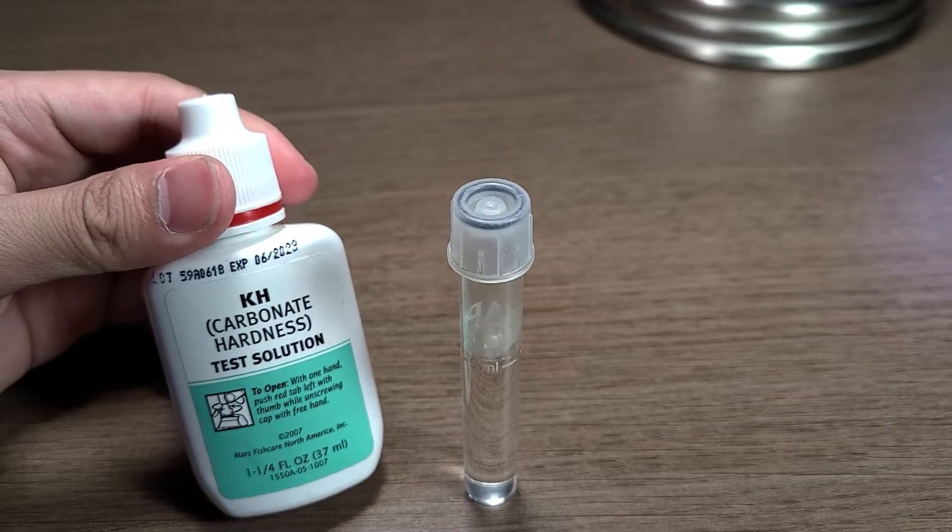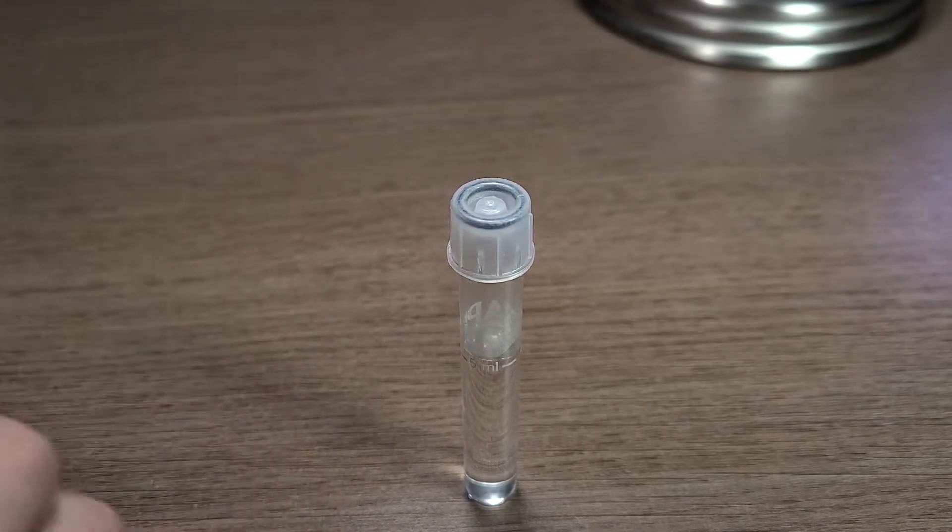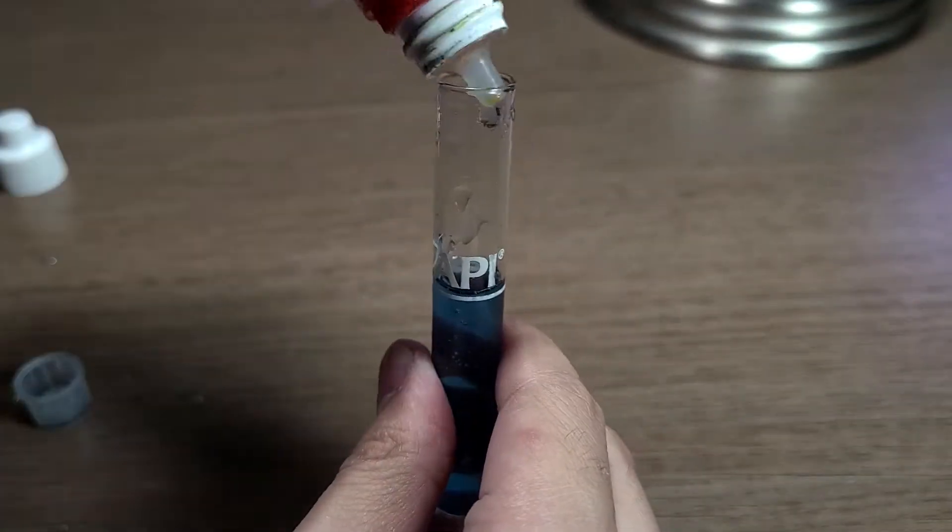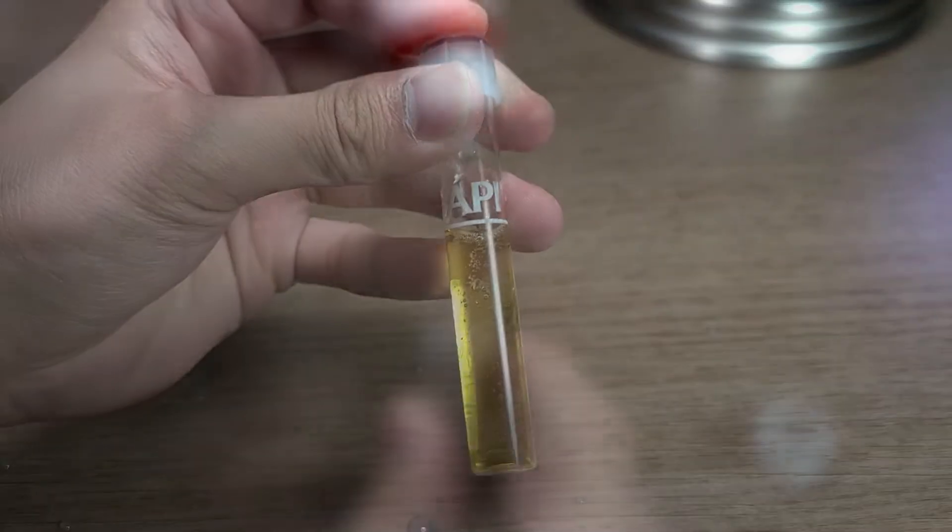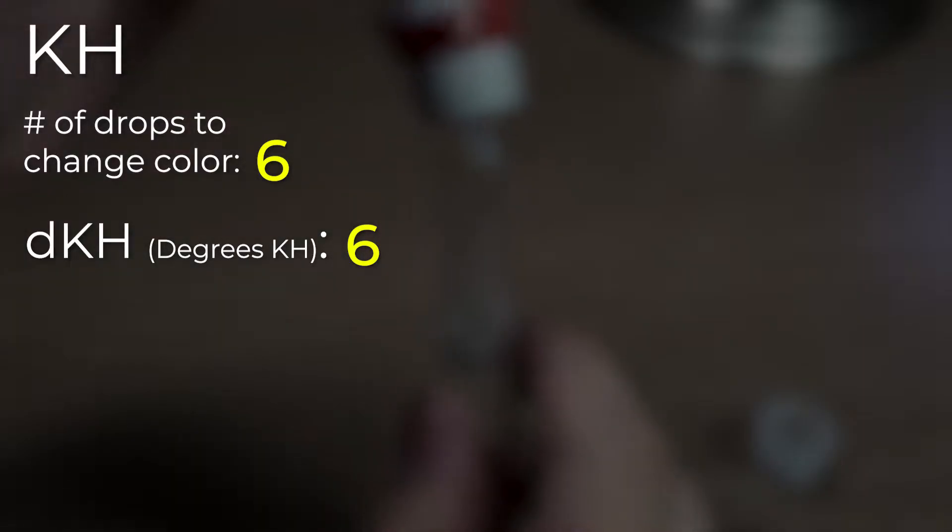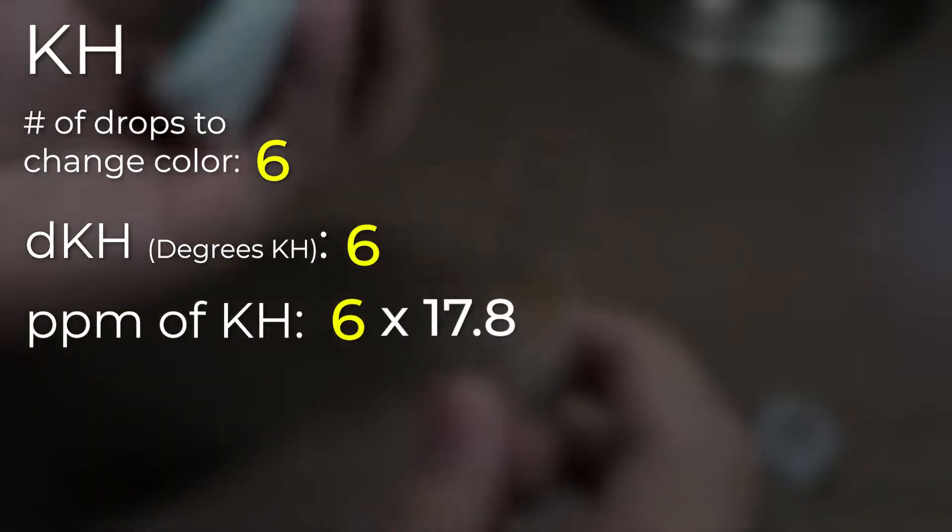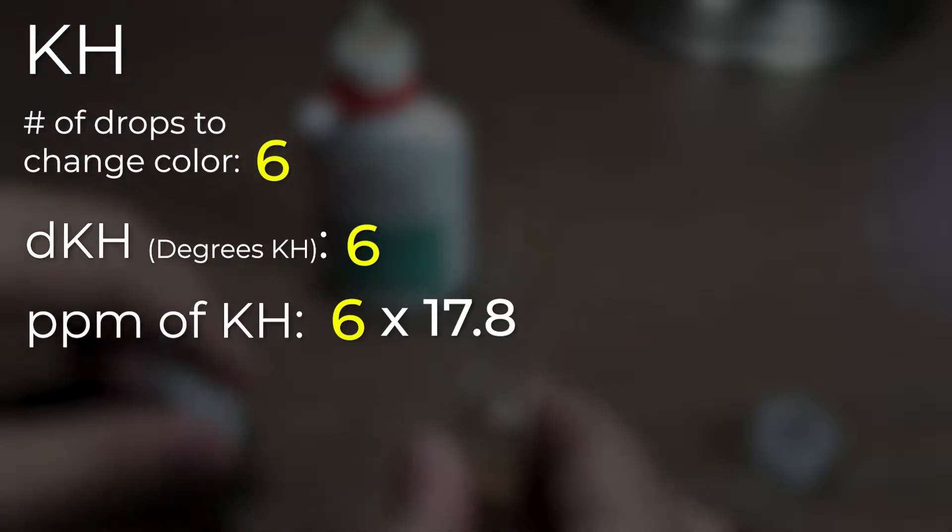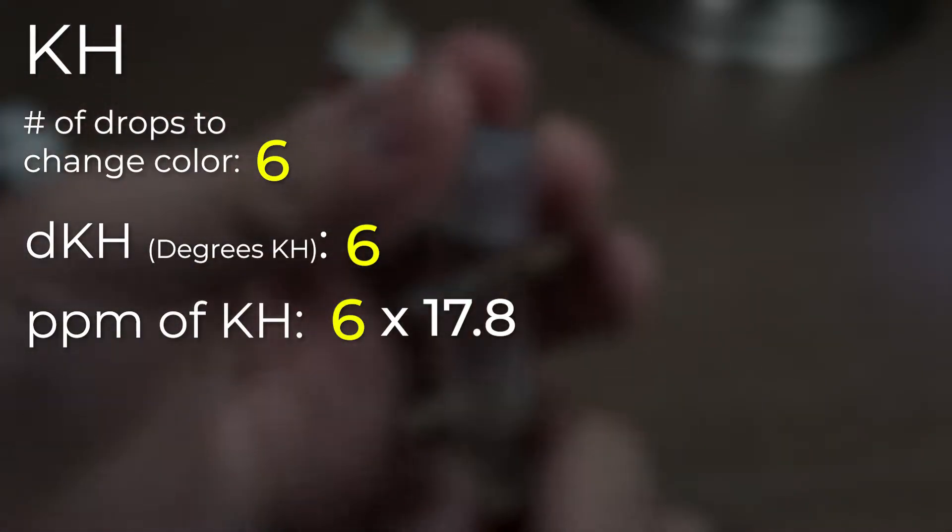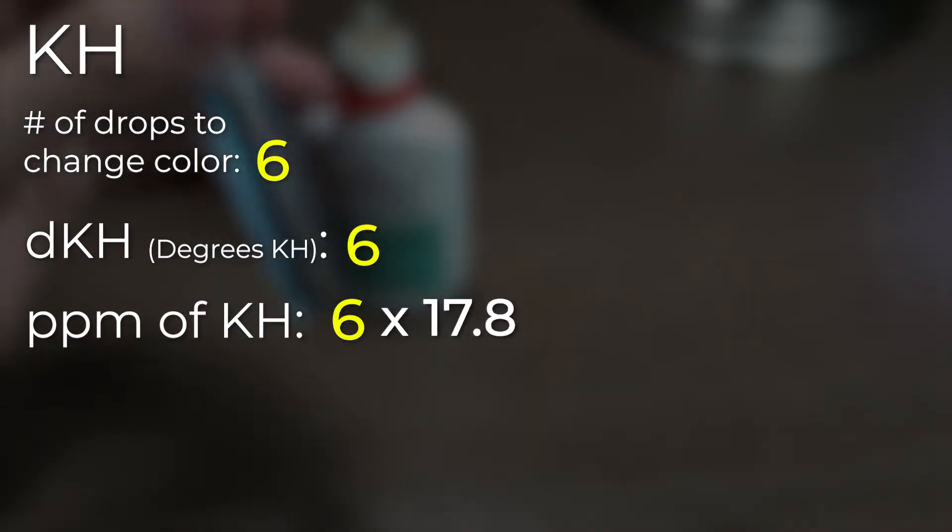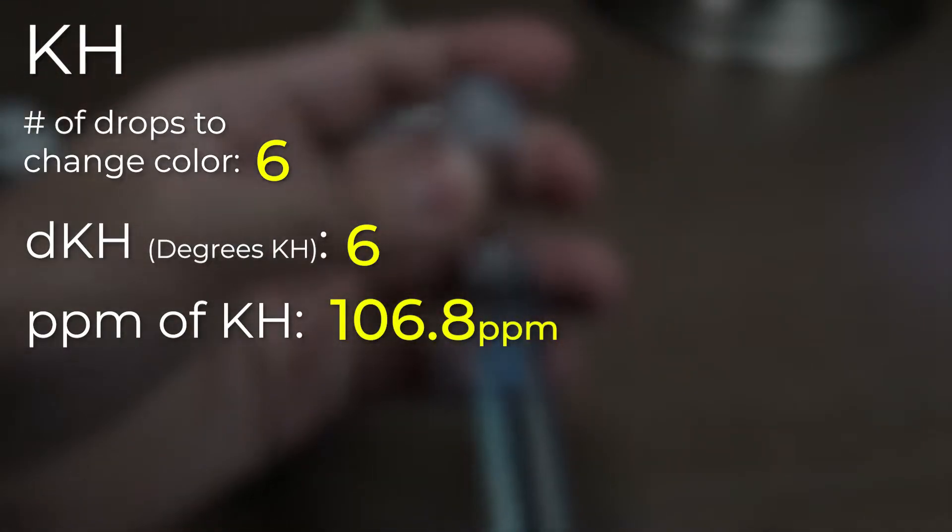For KH, we have the exact same procedure as GH. Add one drop, cap, shake, repeat until the water turns from blue to yellow, and count the number of drops. Take that number, and that is your DKH, or degrees carbonic hardness. To get PPM, we multiply the number by 17.8, so in my case, I have 6DKH, and multiplying it by 17.8 gives me 106.8 PPM of KH.